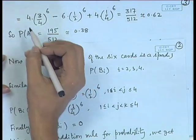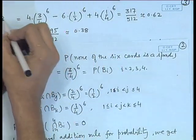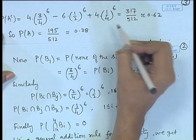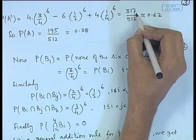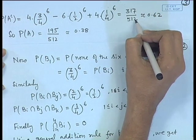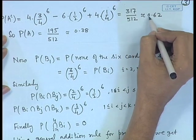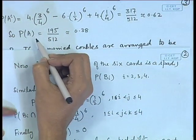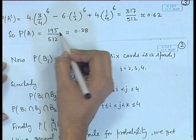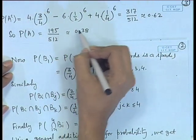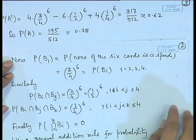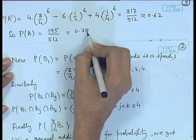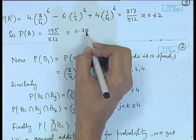After simplification, P(A^c) = 317/512 ≈ 0.62. Therefore P(A) = 1 − 317/512 = 195/512 ≈ 0.38. So the probability that all 4 suits are represented at least once among the 6 drawn cards is approximately 0.38, which is less than 40%.